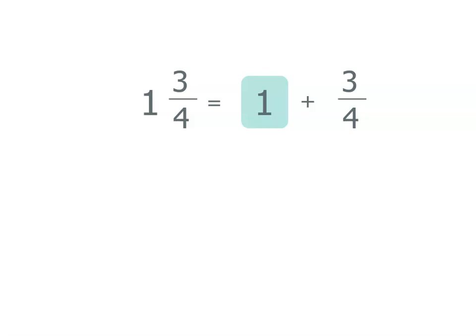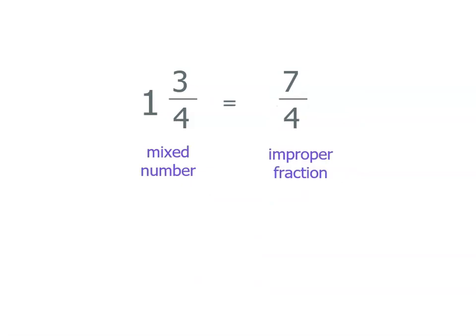Now, if I've got quarters and I've got one, that's all of the quarters. That means I have four quarters. And then I've got three more quarters. So four quarters plus another three quarters means I have seven quarters. So one and three quarters is exactly the same as seven quarters. It's just that one's written as a mixed number and one's written as an improper fraction.